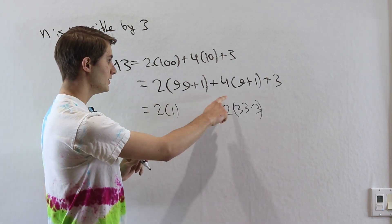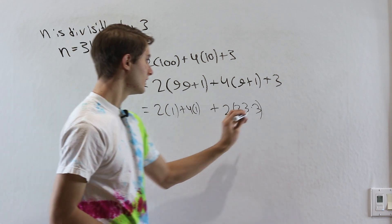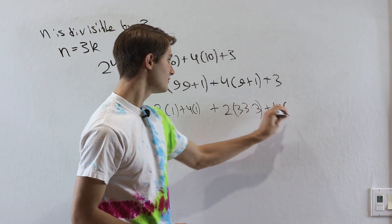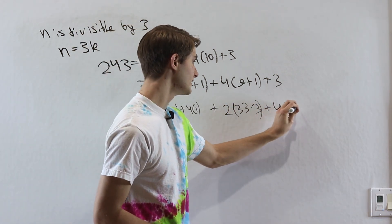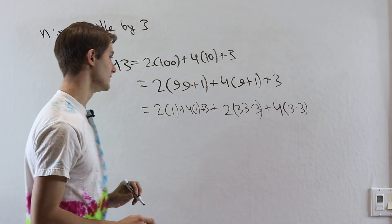For the next one, we have 4 times 1. So we'll put that right here. And then we can add on 4 times, well 9 is 3 times 3. And then finally we have our plus 3 here.